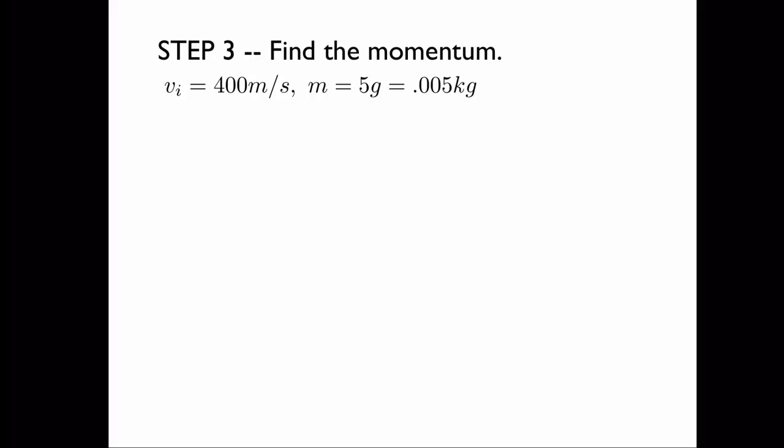We have the initial velocity and the mass of the bullet. The momentum is simply equal to the product of these numbers, which in this case is 2 kilograms times meters per second. Now remember, momentum is conserved.